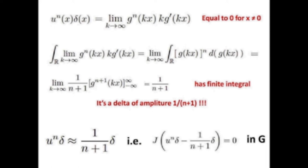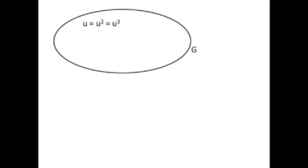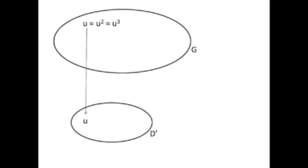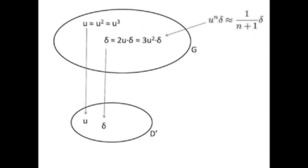So we have an algebra of generalized functions G. In this algebra we can associate different step functions, and they correspond to a single step function in D-prime. Similarly, we can associate products of step and delta functions, and these are mapped to a single element in D-prime.